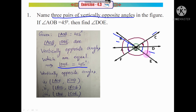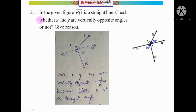Understood, children? That is how we find vertically opposite angles, and if one angle is given, we can find the other angle using the vertically opposite angles property. Now let's see question number 2. In the given figure, PQ is a straight line. Check whether X and Y are vertically opposite angles or not.